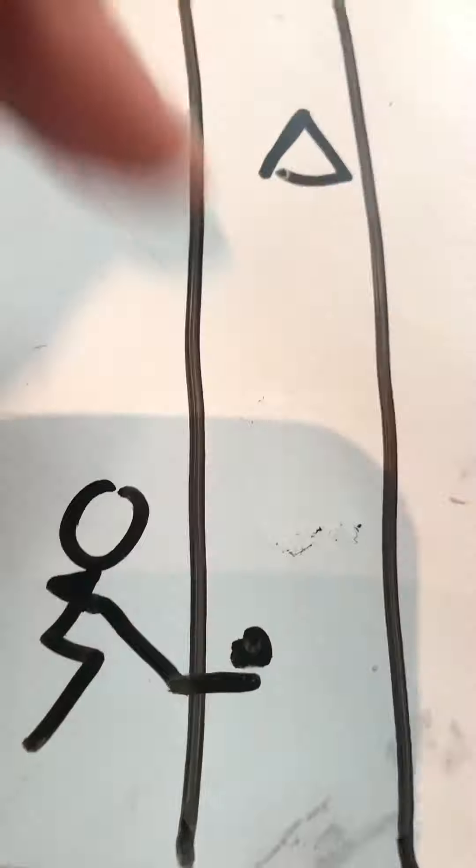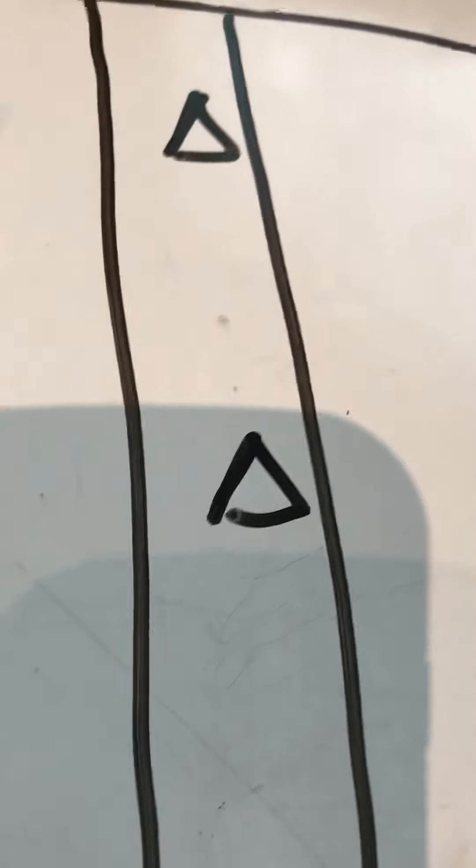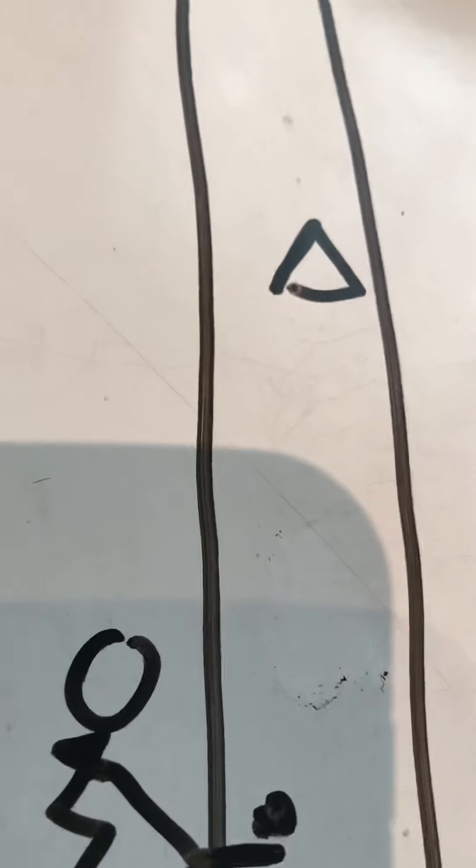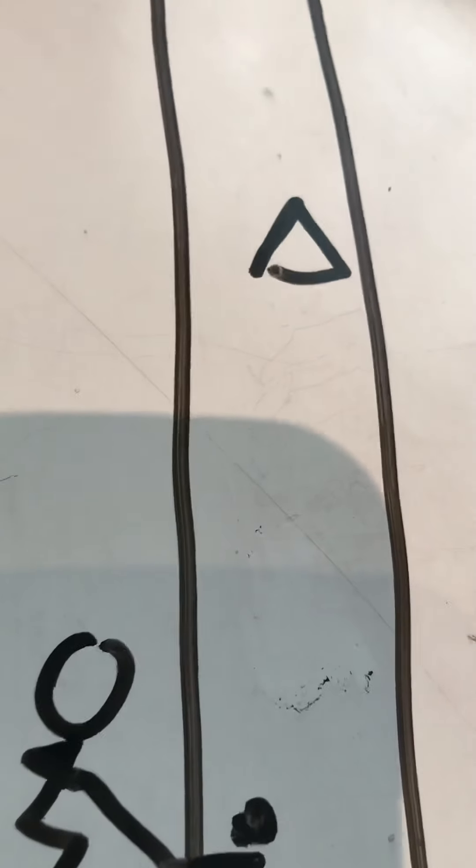Then another puck is passed to the next pylon. You keep doing that until all three pylons have been hit. You can have two teams and whatever team gets the three pylons hit first. And again you've got forward passing and you can then do it with backhand passing, make it more variety.